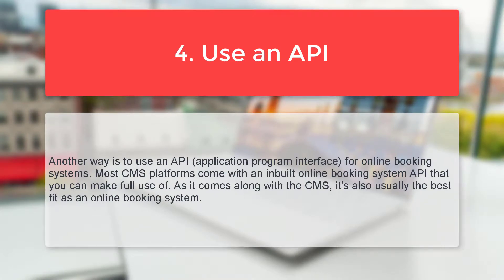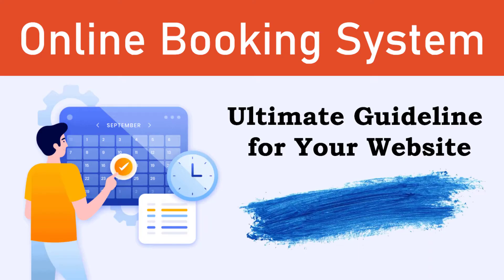Number four: use an API. Another way is to use an API — Application Programming Interface — for an online booking system. Most CMS platforms come with a built-in online booking system API that you can make full use of. As it comes along with the CMS, it is usually the best fit as an online booking system.